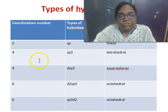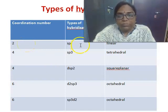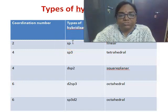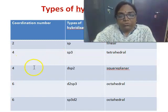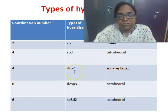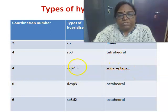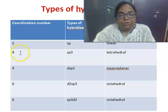According to valence bond theory, if a complex has coordination number 2, the predicted geometry is linear and the hybridization involved is SP hybridization. When there is SP3 hybridization, the predicted geometry is tetrahedral with coordination number 4. For coordination number 4 there are two possibilities: one may undergo SP3 hybridization giving tetrahedral geometry, or DSP2 hybridization giving square planar geometry. Both the tetrahedral and square planar complexes have the same coordination number of 4.